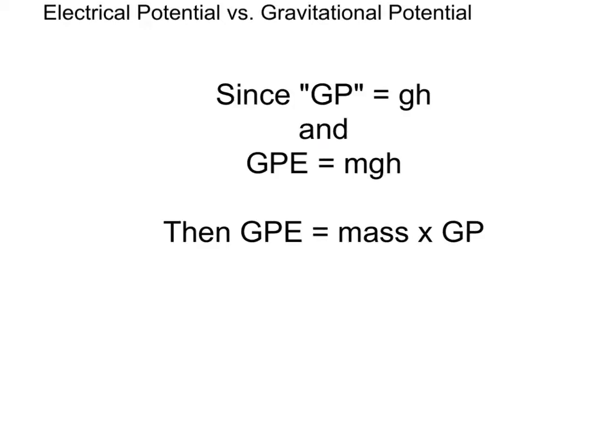Now you may be asking yourself, why define a gravitational potential at all? We got along just fine without it in our unit on energy. Well, since gravitational potential is equal to gh and gravitational potential energy is equal to Mgh, then gravitational potential energy is simply mass times the gravitational potential. If we know the gravitational potential at a particular location in space, we can find the gravitational potential energy of any mass at that location simply by multiplying by the mass. The idea of a potential is going to be very useful when we extend this to electric potential.